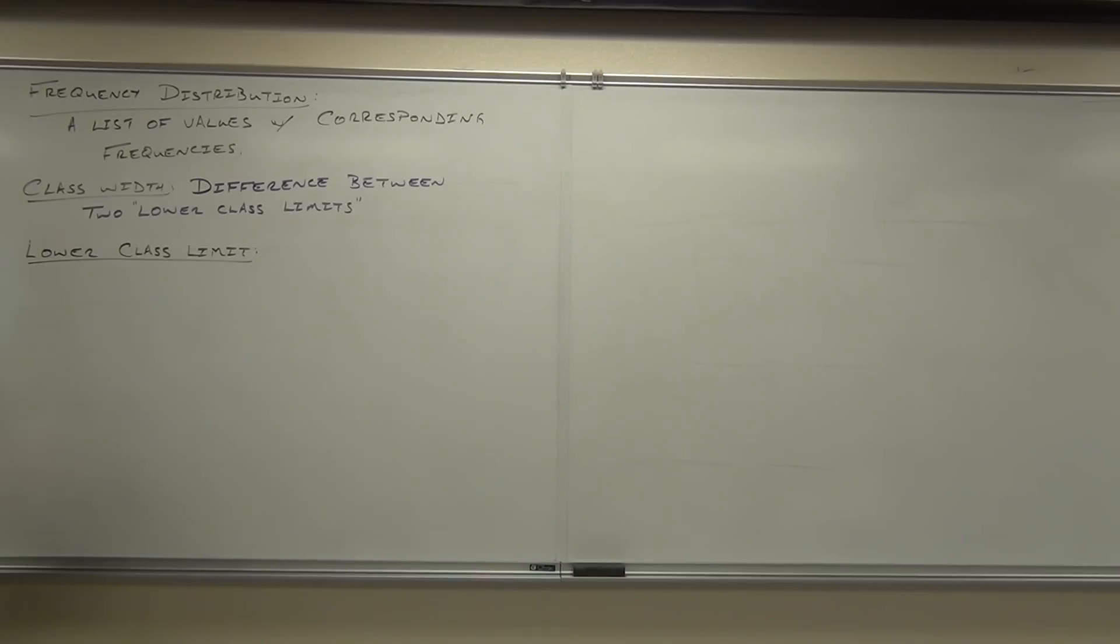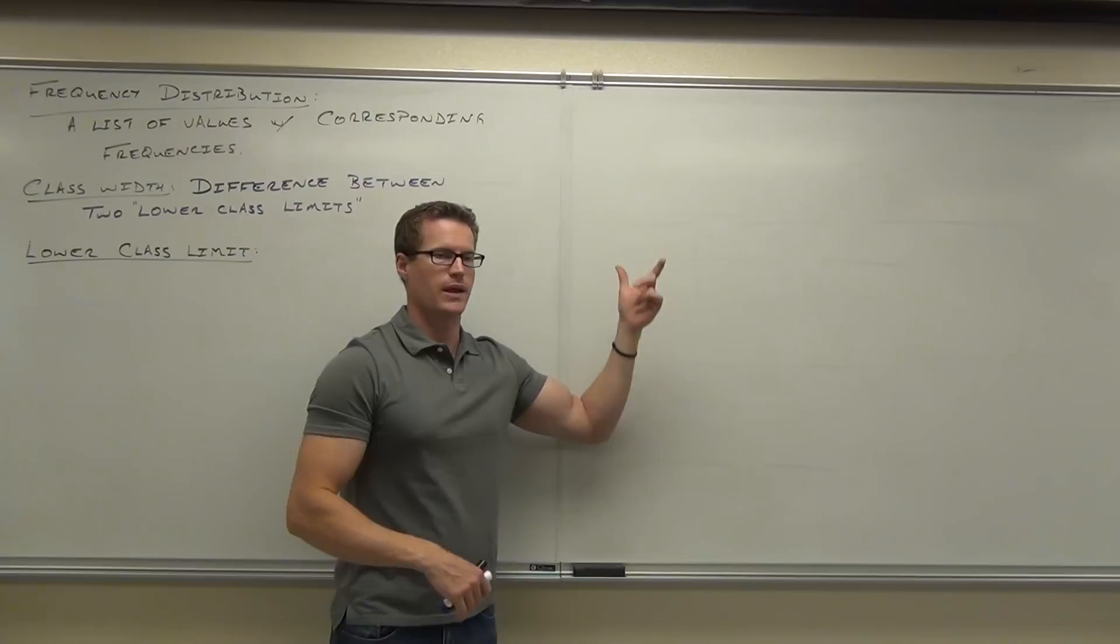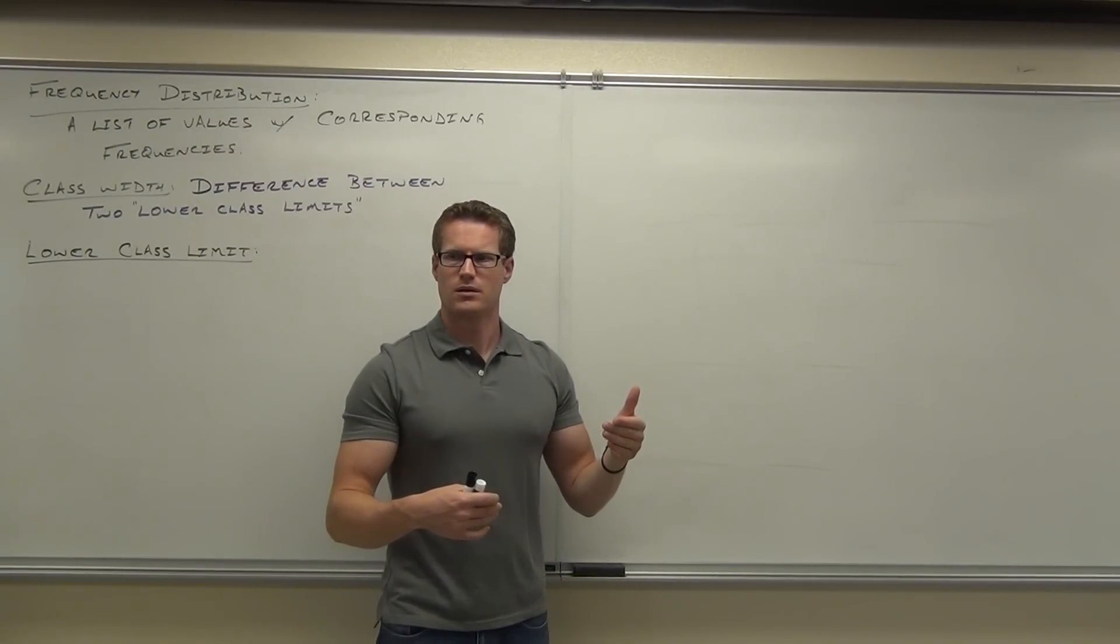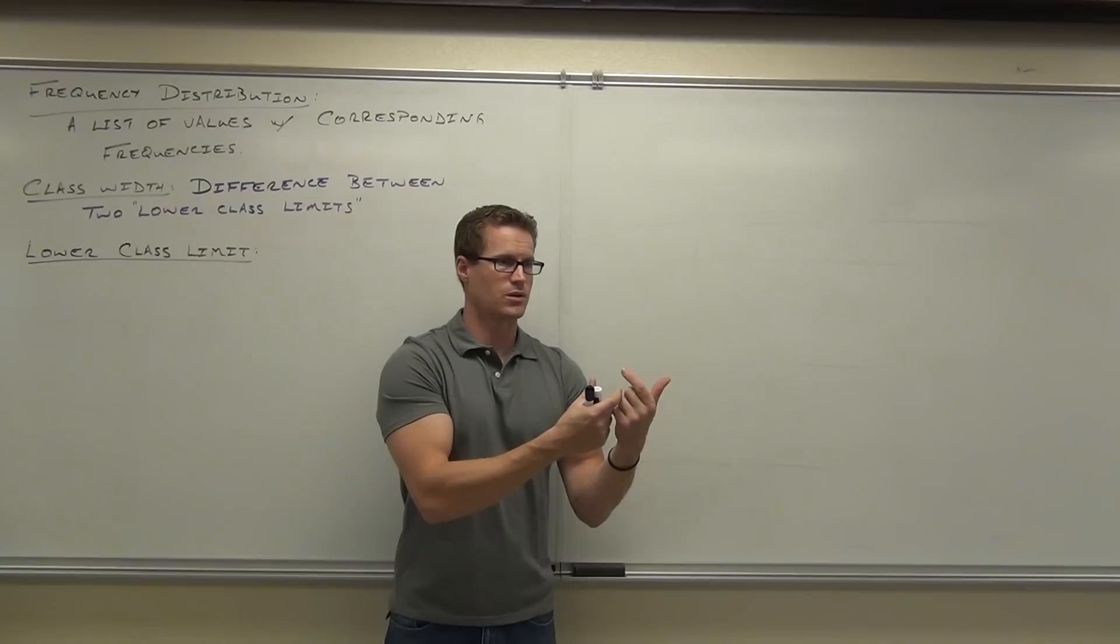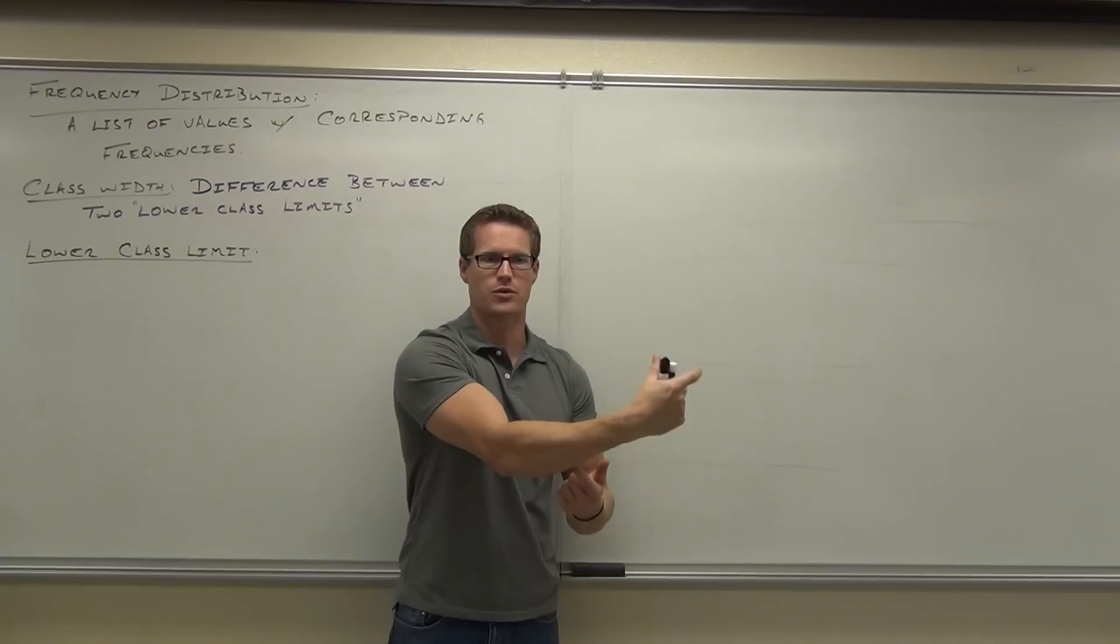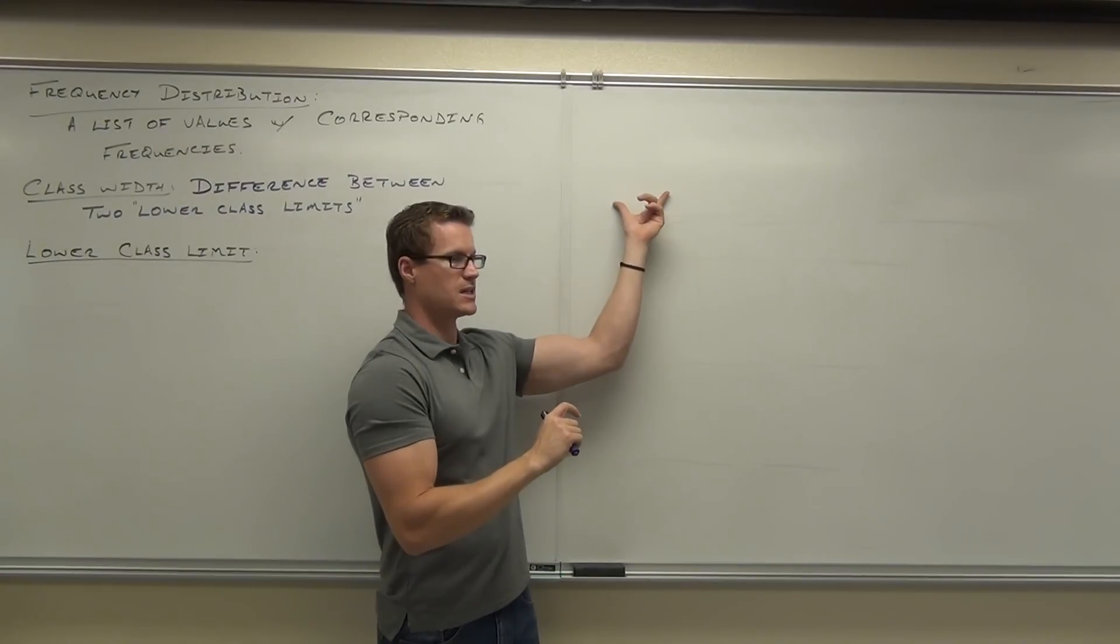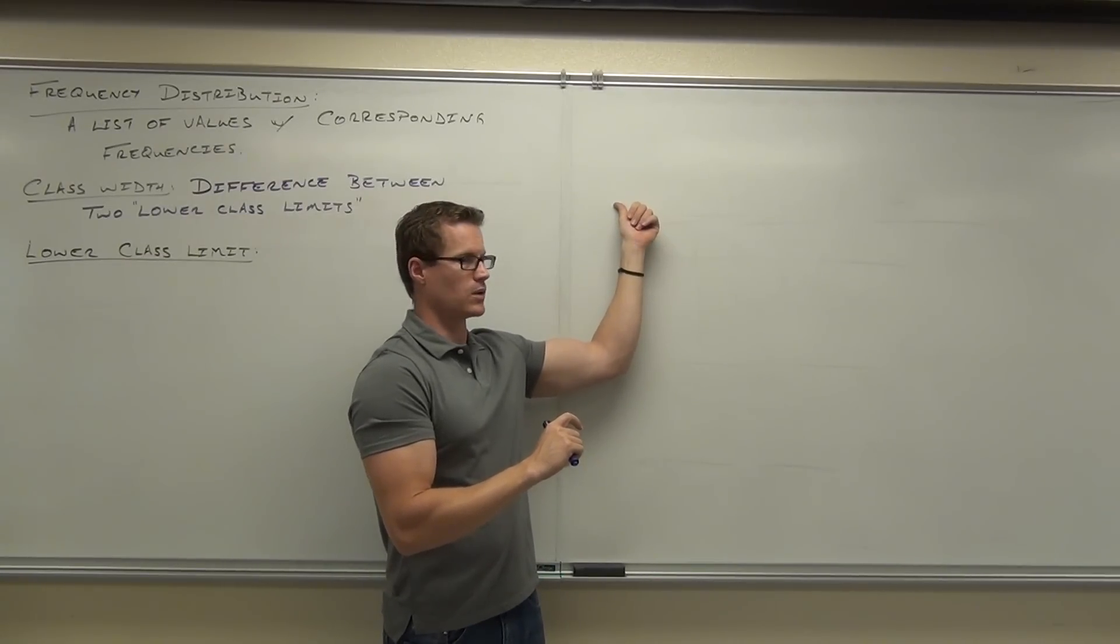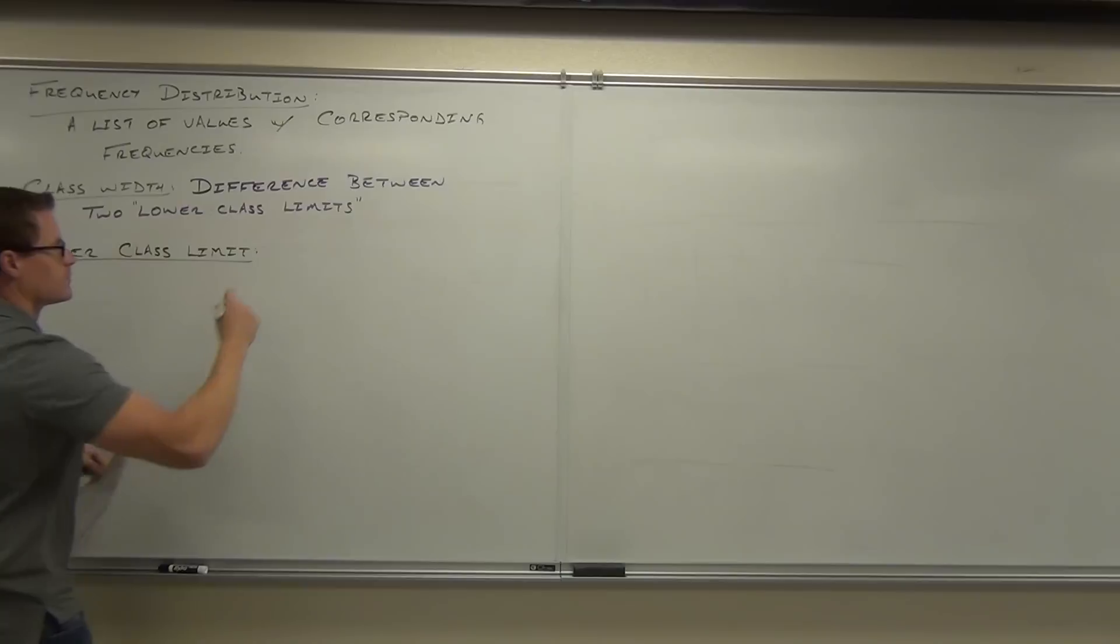Well what in the world is a lower class limit then? Lower class limit—classes is not like this class, it's like the group, like the group of data that you're going to try to collect from. Like in here, do we have anyone under 18 in here? So 18 is going to be our starting point. Under here, in this class, our first group is probably going to be 18 to 20 year olds. And that will be our first group, or 18 to 21 year olds. That will be our first class. The lower class limit is where the class starts. So if I have a group of 18 to 21 year olds, 18 would be my lower class limit. That's where the class starts. So we'll say here, the smallest number belonging to a class.